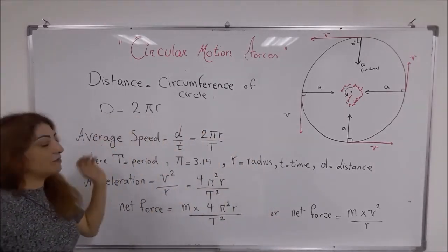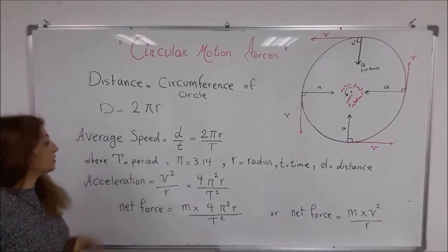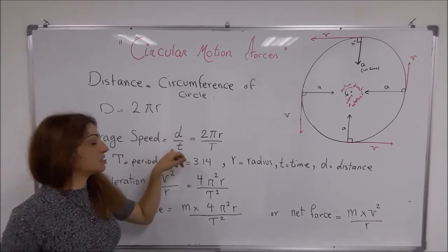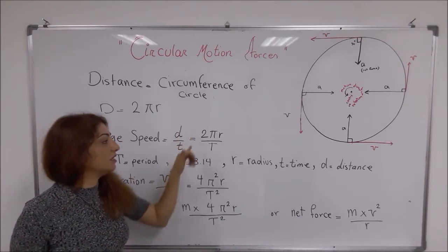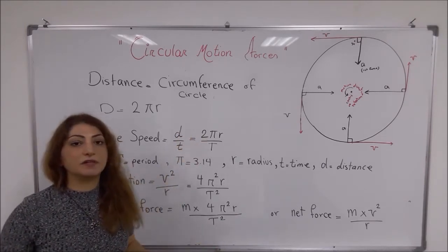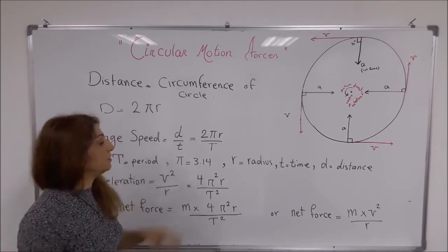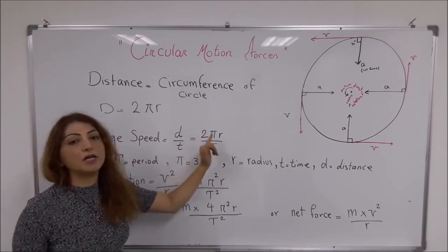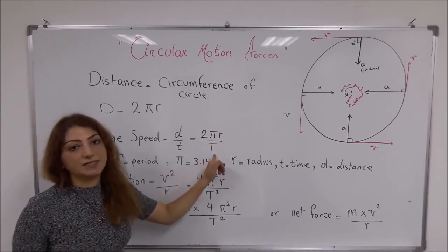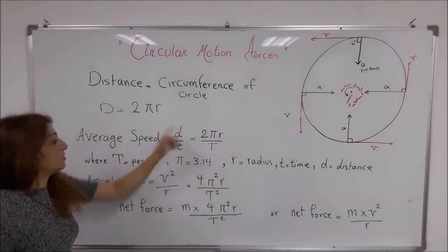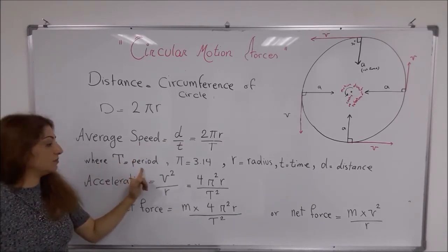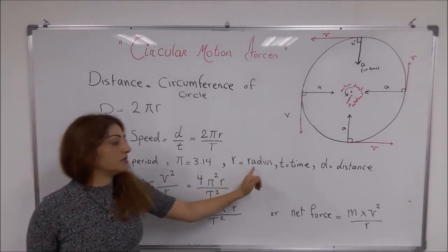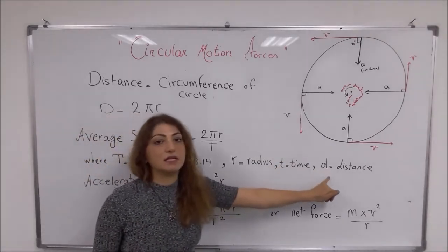The average speed can be calculated using distance over time (d/t), where d is distance and t is time. Or, if you don't have distance and time but the radius and the period are given, you can calculate the average speed using: average speed equals 2πr divided by T, where T is the period, π is 3.14, r is the radius, and d is distance.